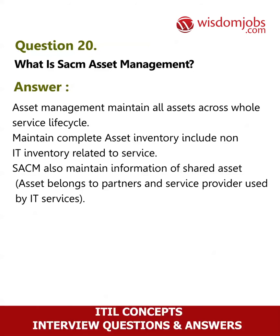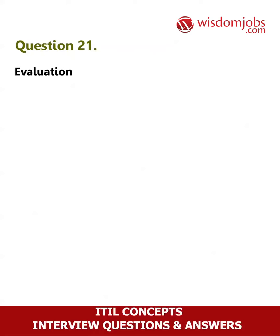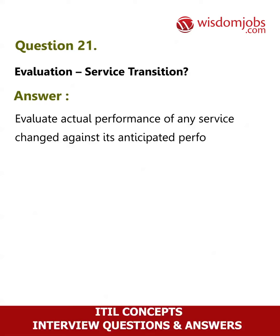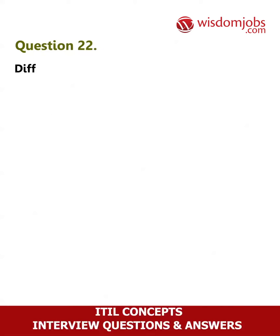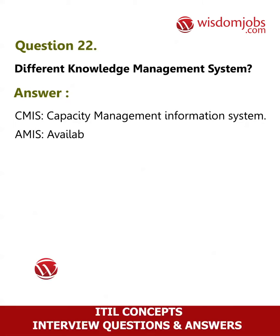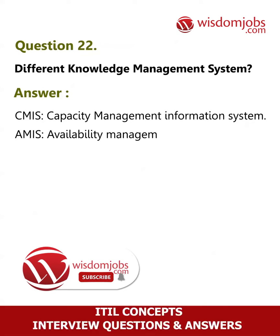Question 21: Evaluation in service transition. Answer: Evaluate actual performance of any service changed against its anticipated performance and identifying risk. Question 22: Different knowledge management systems. Answer: CMIS is capacity management information system. AMOS — availability management.